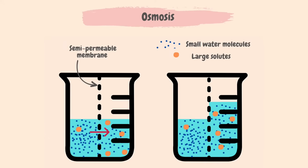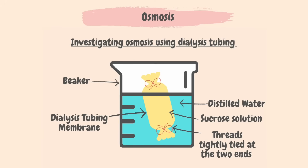Let's investigate osmosis using dialysis tubing. A section of dialysis tubing filled with concentrated sucrose solution has been suspended in distilled water. Dialysis tubing, also known as visking tubing, is a non-living partially permeable membrane. The pores in this membrane are small enough to block large molecules such as sucrose from moving across, but allow smaller molecules such as water to pass through by osmosis. Water moves from a region of higher water potential (dilute solution) to a region of lower water potential (concentrated solution) through the partially permeable membrane. Therefore, the water level outside the tubing will decrease as water moves into the tubing via osmosis.